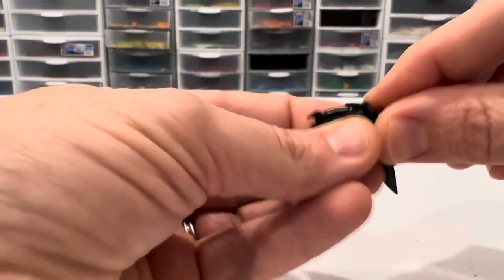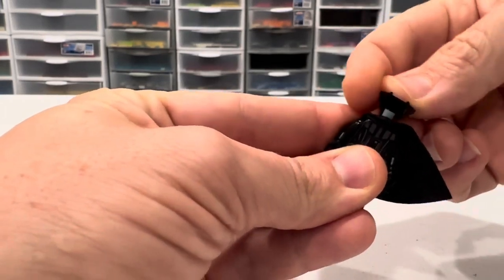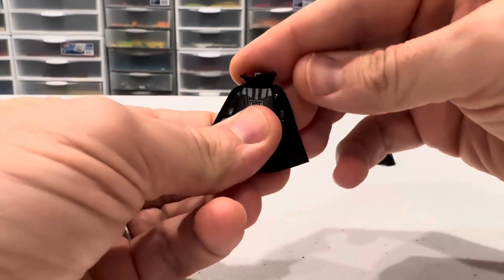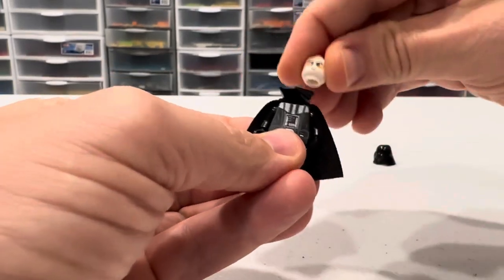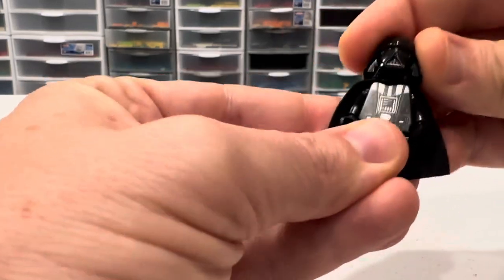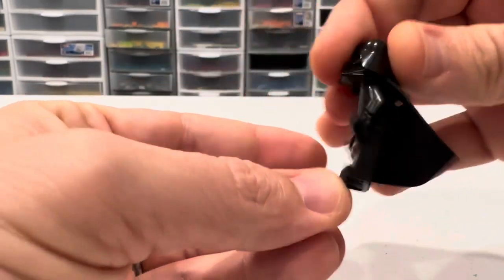Very simple there. Now, with this Vader, we've got the two-piece helmet. Put this down. Make sure the cape is oriented properly. Head on. And, of course, the helmet. And we have our friend, Darth Vader.